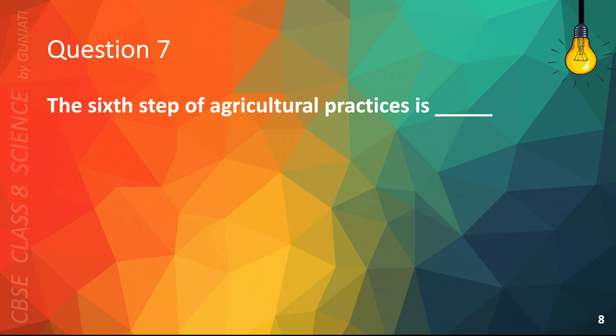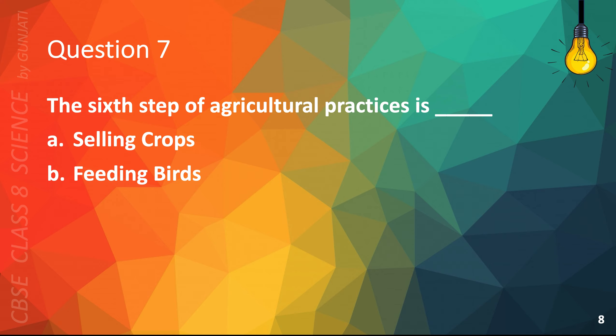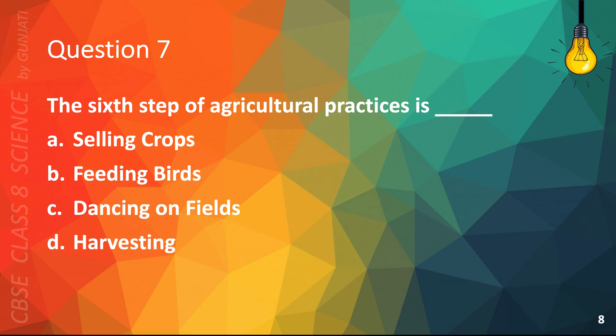Question 7. The sixth step of agricultural practices is: A. Selling crops, B. Feeding birds, C. Dancing on fields, or D. Harvesting. The correct answer is D. Harvesting.